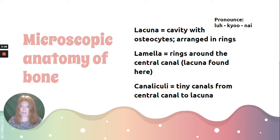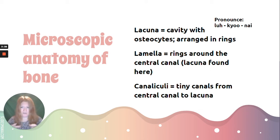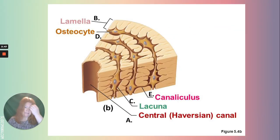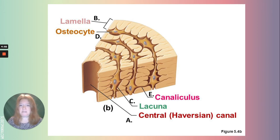Then we have canaliculi — tiny little canals that go from the central canal to those open spaces. Why does it need to reach that open space in the ring? Because that open space houses the osteocyte, which helps keep the bone functioning correctly. In this diagram, you can see the lamella — the rings — and the lacunae, the spaces between those rings. In those spaces we have osteocytes, and here's the central canal.